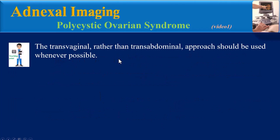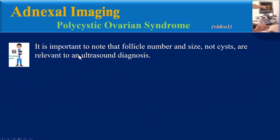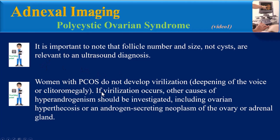The transvaginal rather than transabdominal approach should be used whenever possible. Not all women with possible PCOS require ultrasound — if a patient has both oligomenorrhea and evidence of hyperandrogenism, and other causes have been ruled out, she meets criteria for PCOS and ultrasound is not necessary. It is important to note that follicle number and size — not cysts — are relevant to the ultrasound diagnosis. Women with PCOS do not develop virilization; if virilization occurs, other causes such as ovarian hyperthecosis or an androgen-secreting neoplasm of the ovary or adrenal gland should be investigated.